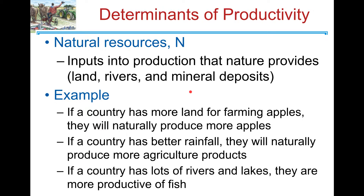For example, in the U.S., there's plenty of land for farming apples and milking cows, so U.S. farmers will naturally produce more apples. Another example: if a country has a lot of rainfall, then they will naturally grow more agricultural products.